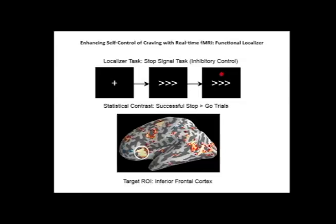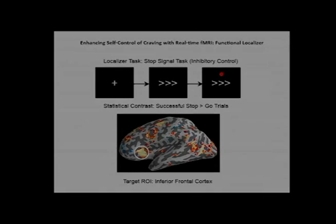This brain area is the target for real-time fMRI neurofeedback. This is the stop signal task, which is a measure of response inhibition.